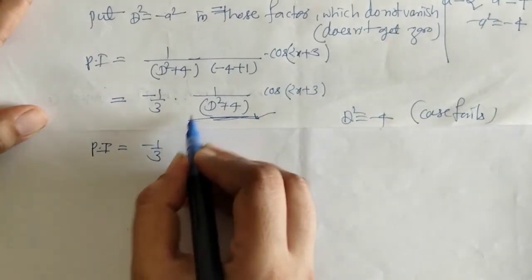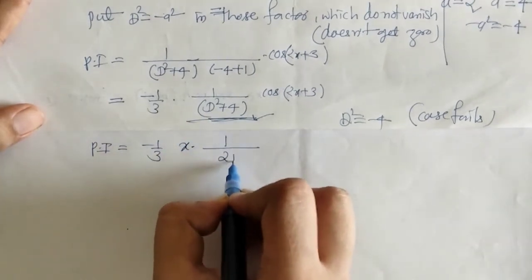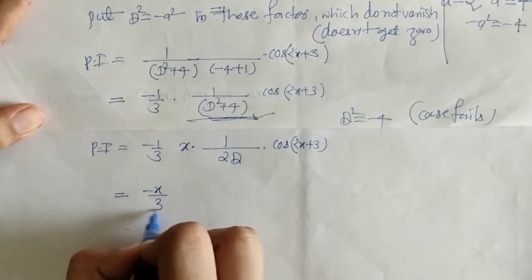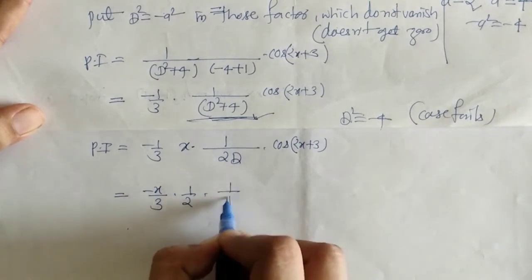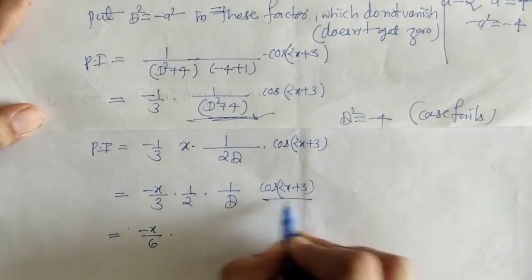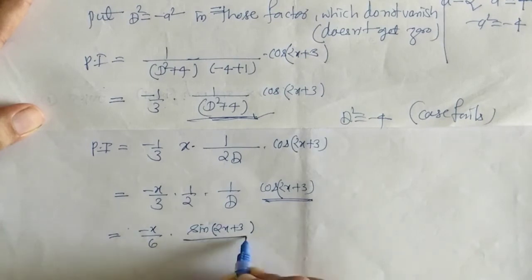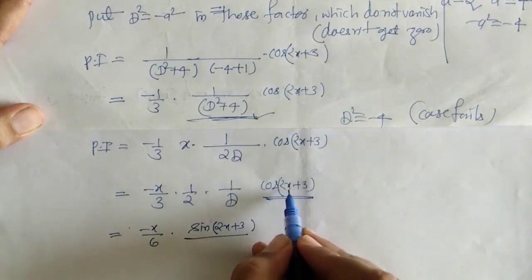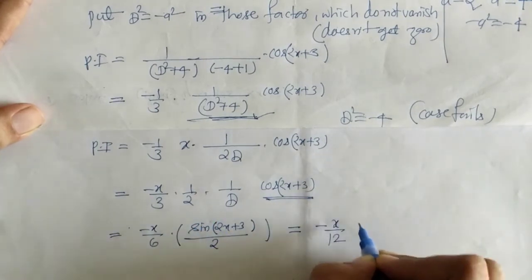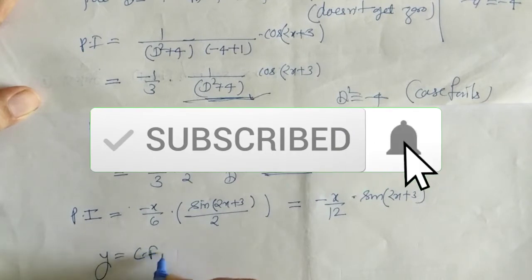We multiply by x and take the derivative of f(D), giving 2D with cos(2x+3) as it is. Then 1/D means integration. The integration of cos(2x+3) is sin(2x+3), and the coefficient of x is 2, so on simplification we get sin(2x+3)/2. This is the PI, and we write the complete solution as CF plus PI.